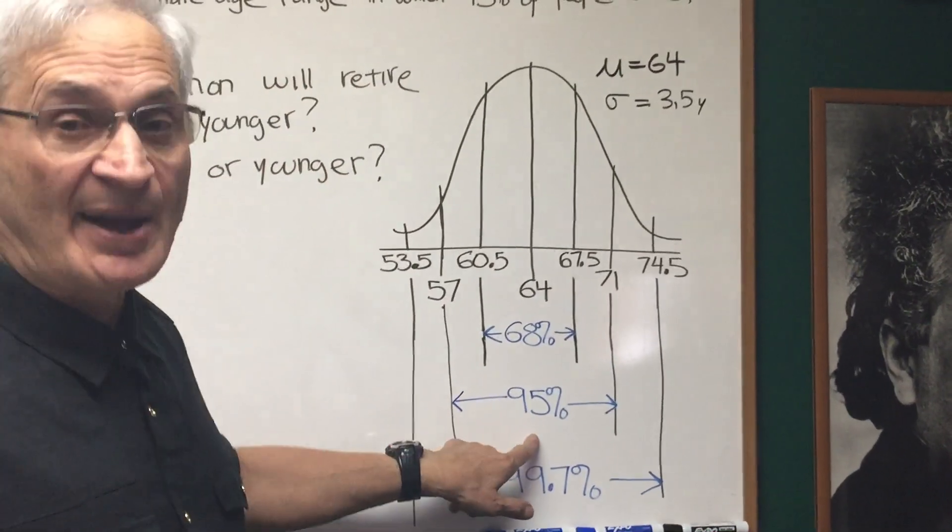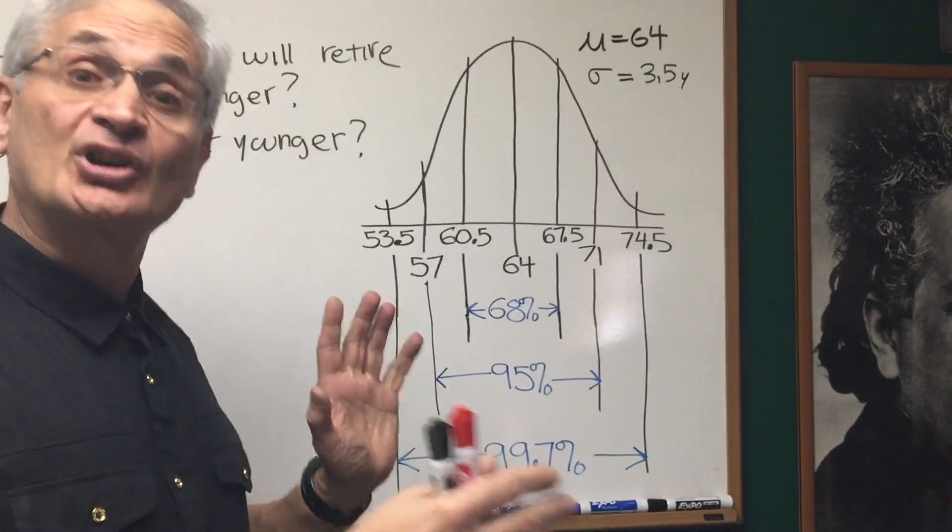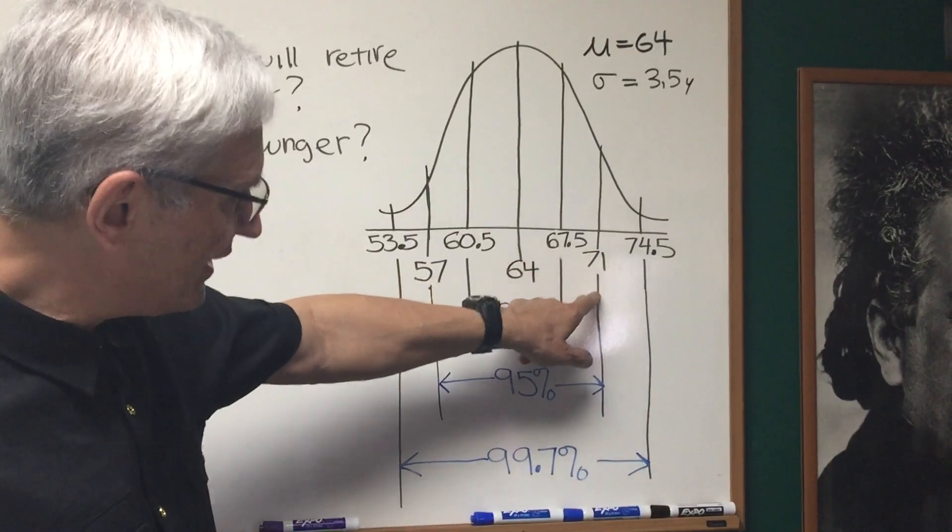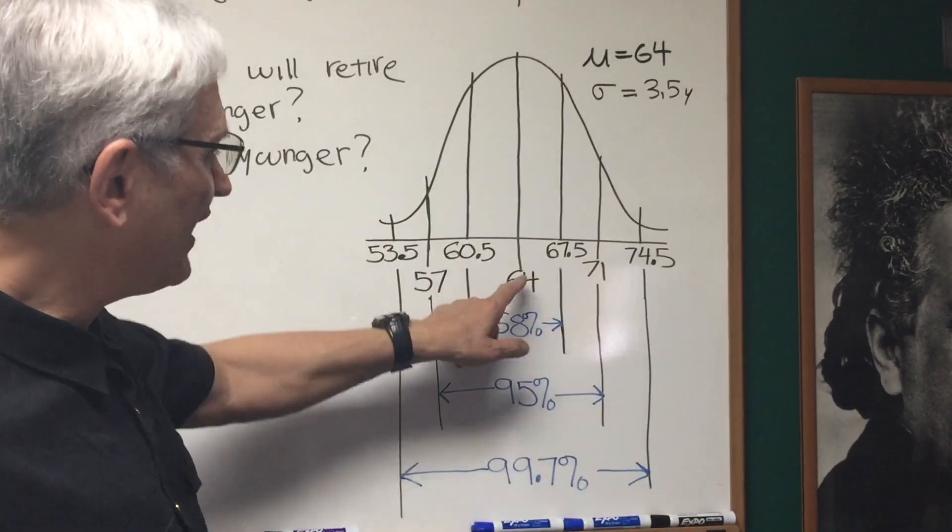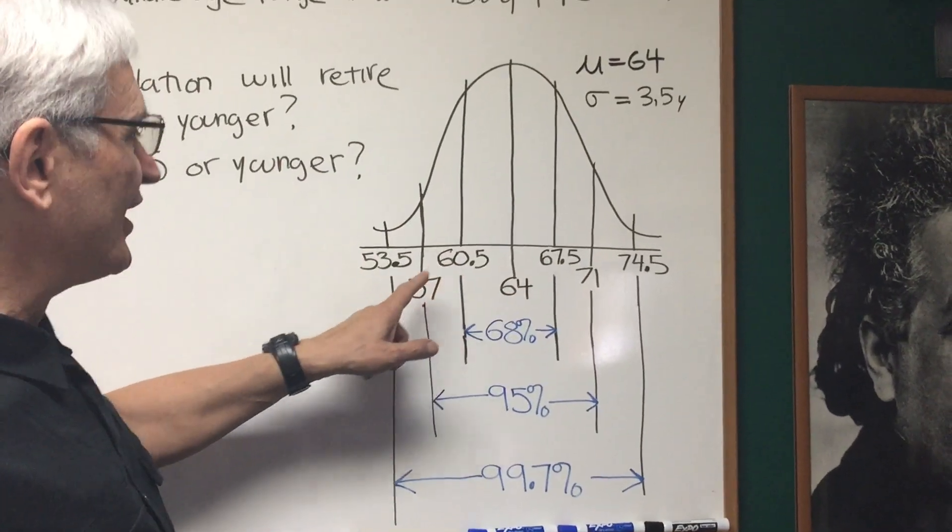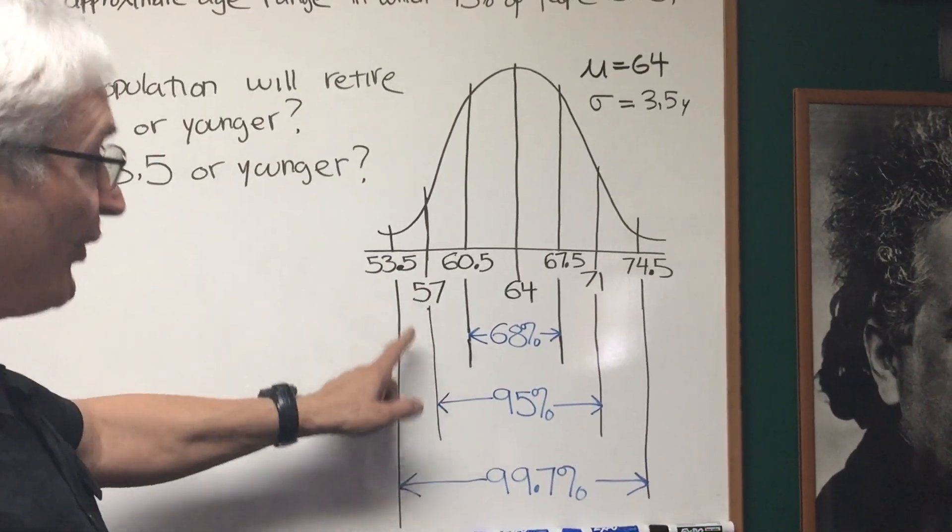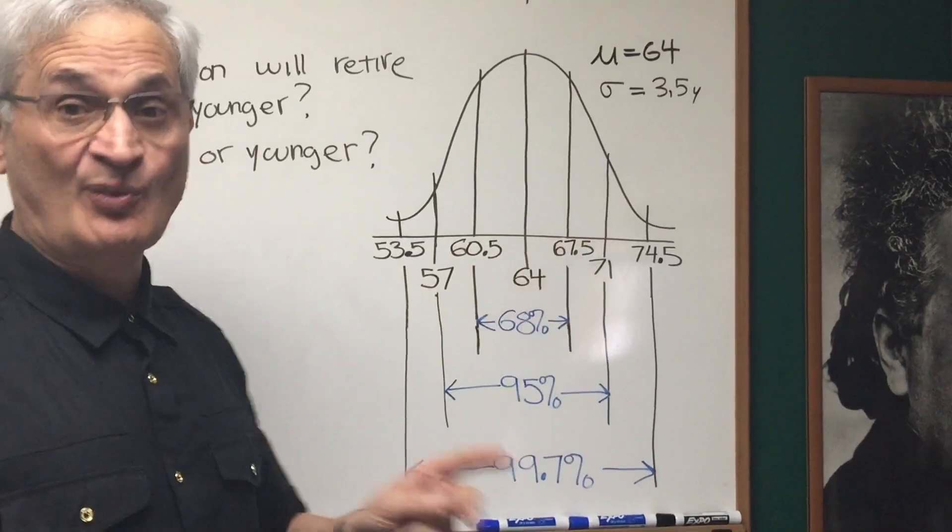95% of the population then will fall within two standard deviations of the mean. So we take 64, add 3.5 twice, we get 71 on the right, subtract 3.5 twice, we'll get 57 on the left. 95% of the population falls within the ages of 57 and 71. Two standard deviations from the mean.